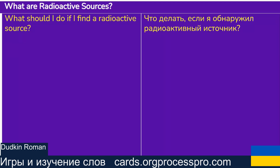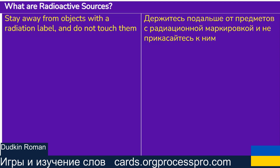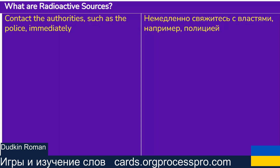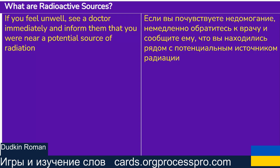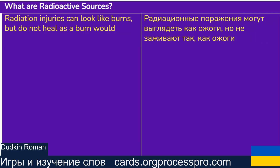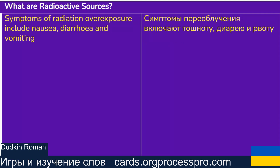What should I do if I find a radioactive source? Stay away from objects with a radiation label and do not touch them. Contact the authorities, such as the police, immediately. If you feel unwell, see a doctor immediately and inform them that you were near a potential source of radiation. Radiation injuries can look like burns but do not heal as a burn would. Symptoms of radiation overexposure include nausea, diarrhea and vomiting.